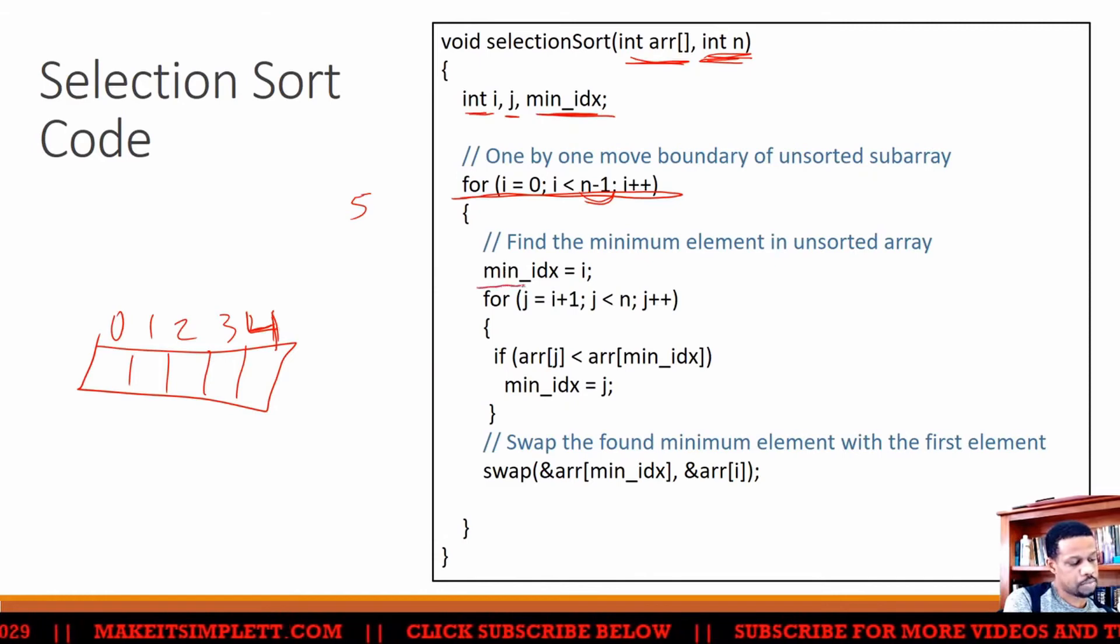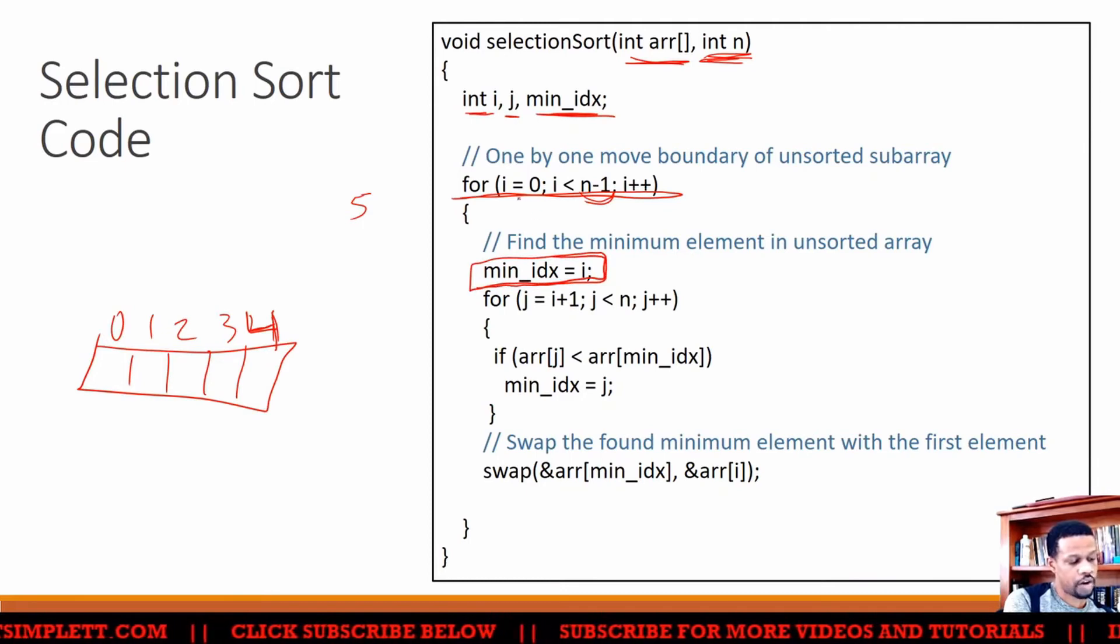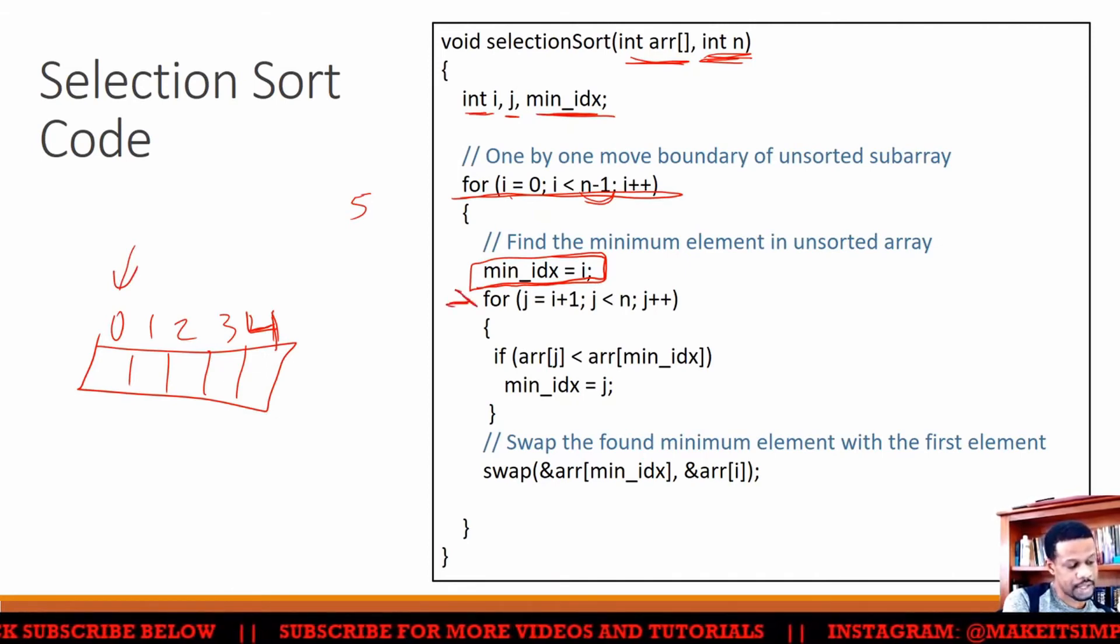I'm going to set the minimum index or minimum location to wherever i is at that point in time, which is location 0. Once I set that to 0, I'm going to have now my second loop. This second loop is what's going to be doing the swapping.